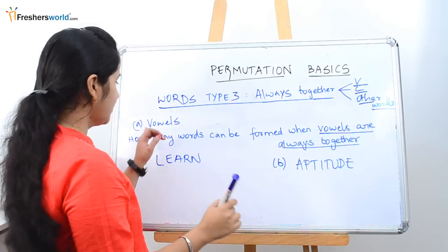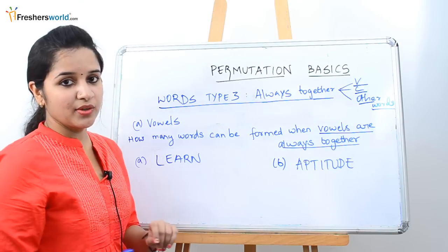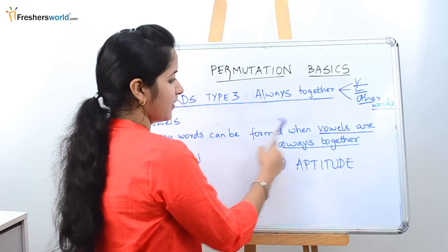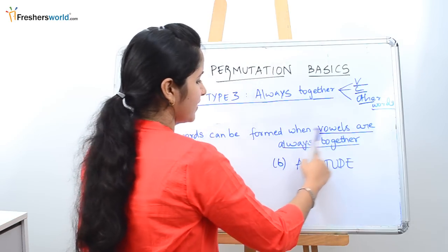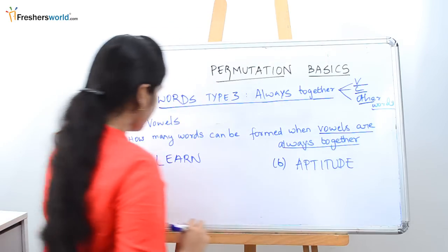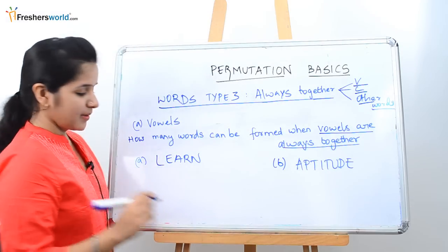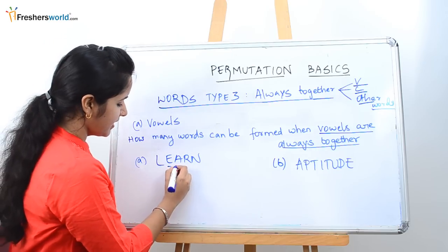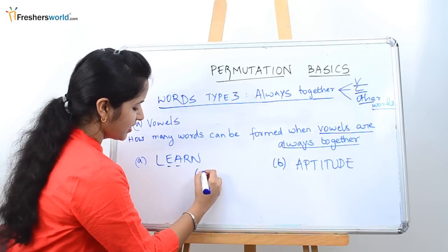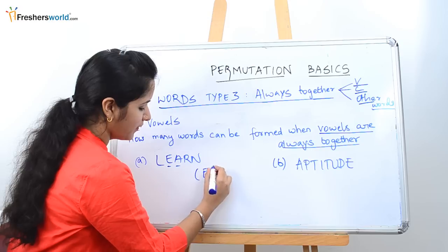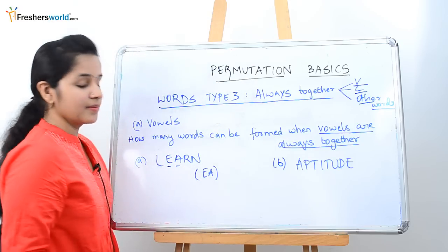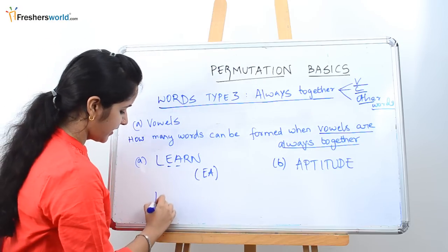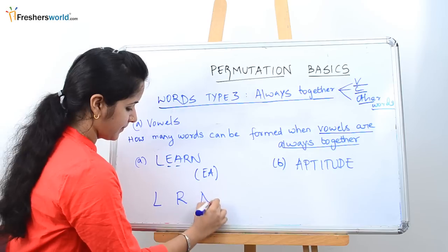First, let's start with vowels always together. The question is: how many words can be formed when vowels are always together? So let's take an example. The word is LEARN. What are the vowels here? E and A. They are saying E and A should always be together. What are the remaining letters? L, R, N.